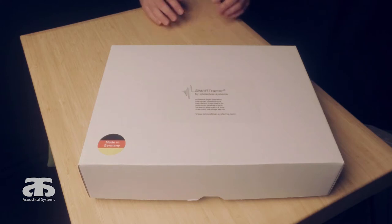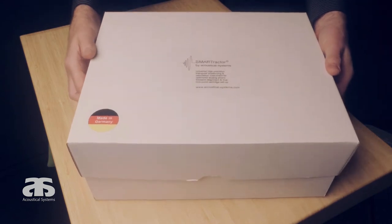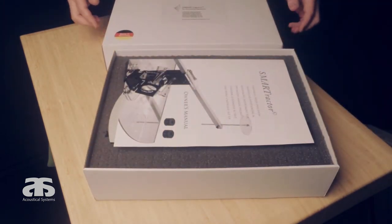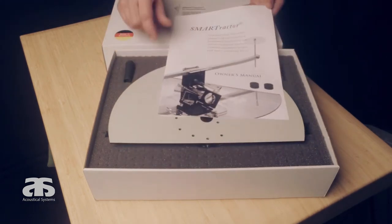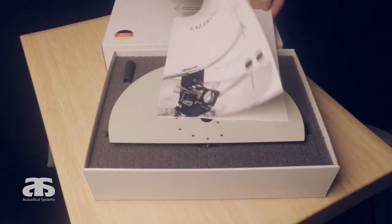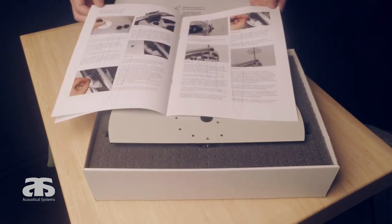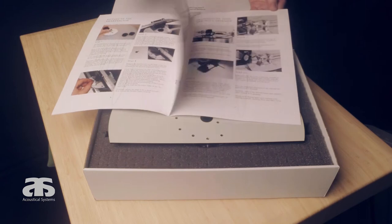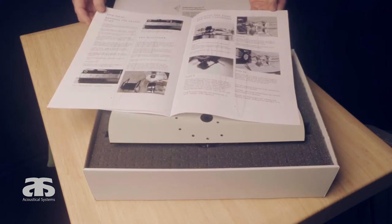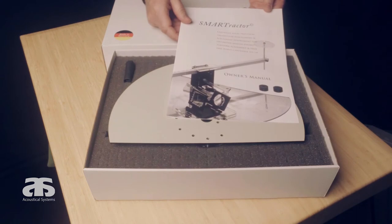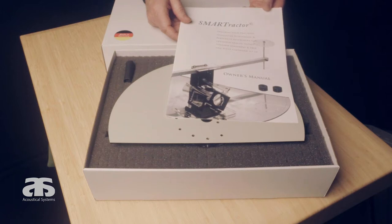The SmartTractor comes in a dedicated box. First thing, when you open the box, you'll find the owner's manual. It's pictured and will lead you to the complete operation of the SmartTractor. Please make sure you make yourself accustomed to it, or otherwise, you're welcome to watch the other videos showing the SmartTractor in actual operation for phono alignment.